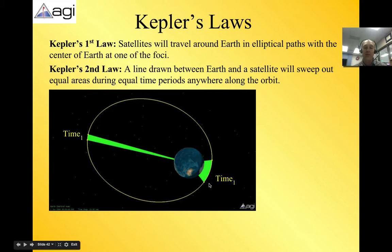In 40 minutes, it's going really fast on this side of the Earth as it whips around. It goes a big distance. We find the area of this slice. Those two areas are going to be exactly the same. So that is Kepler's second law. The line drawn between Earth and a satellite will sweep out equal areas during equal time periods anywhere along the orbit.